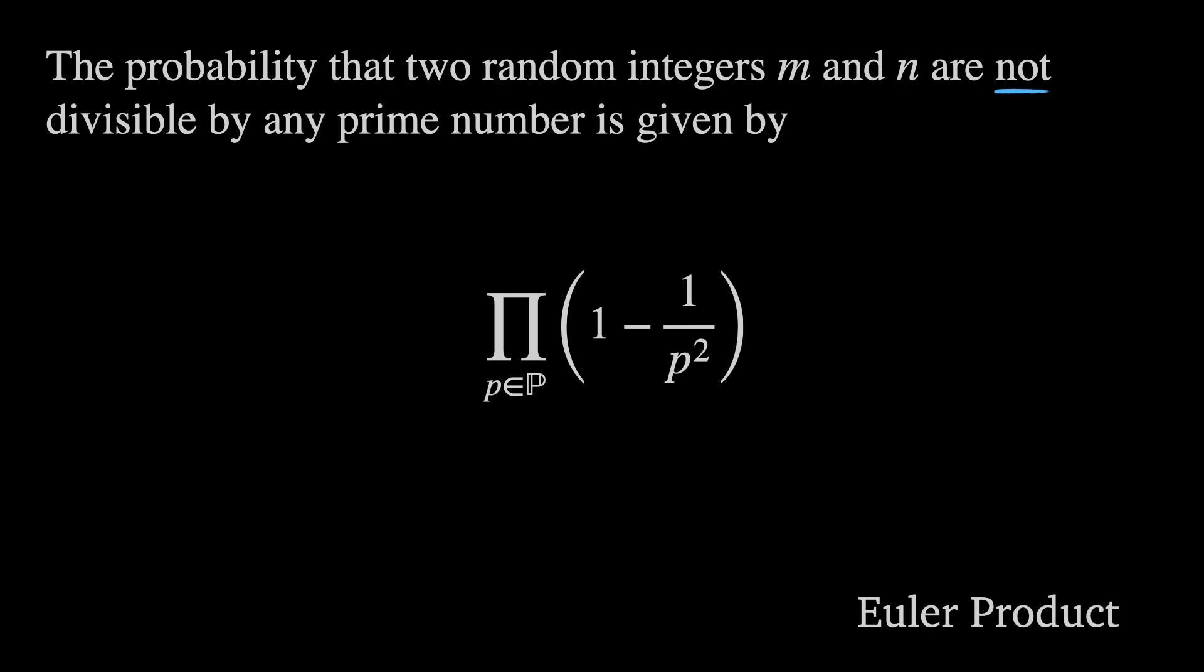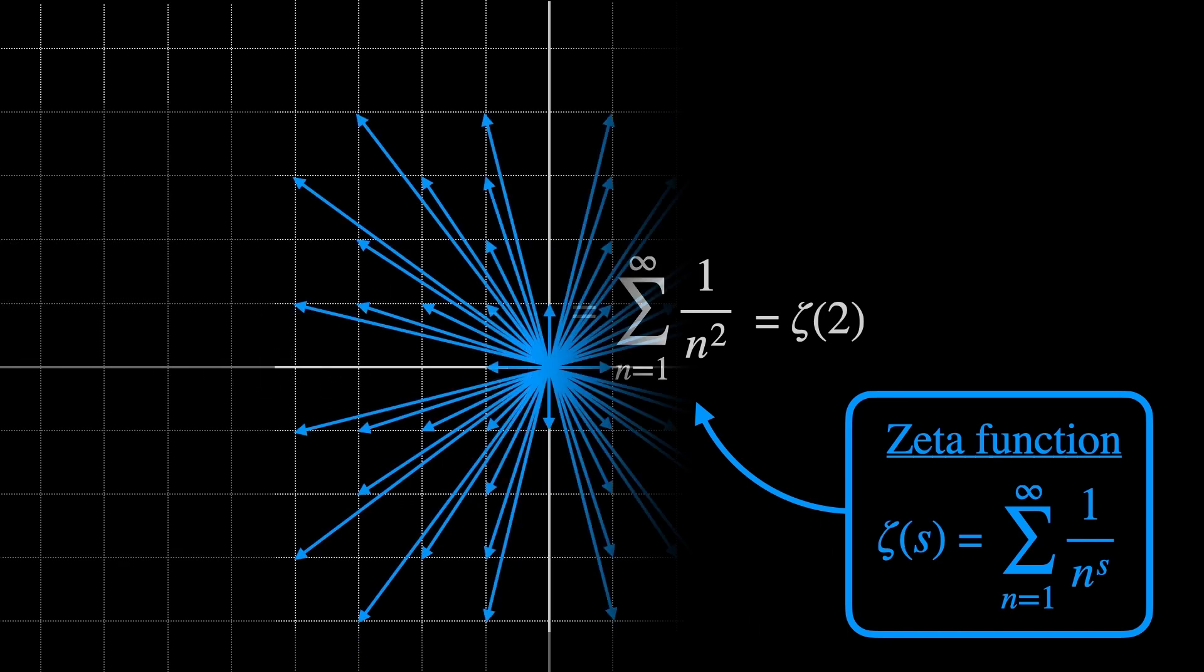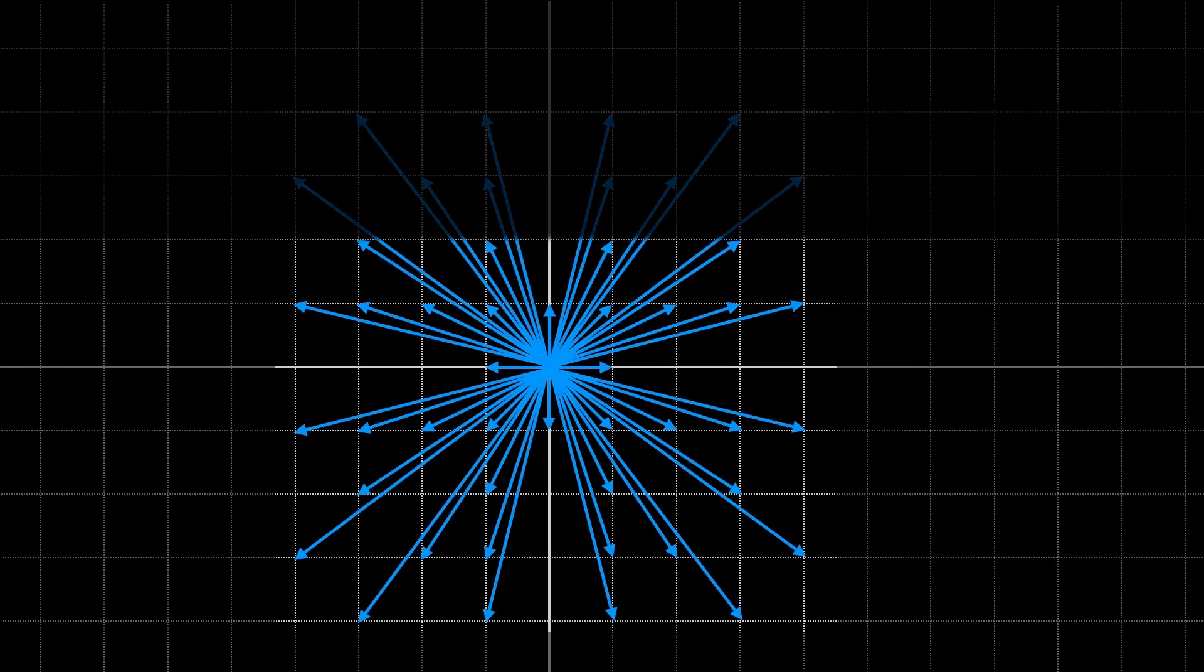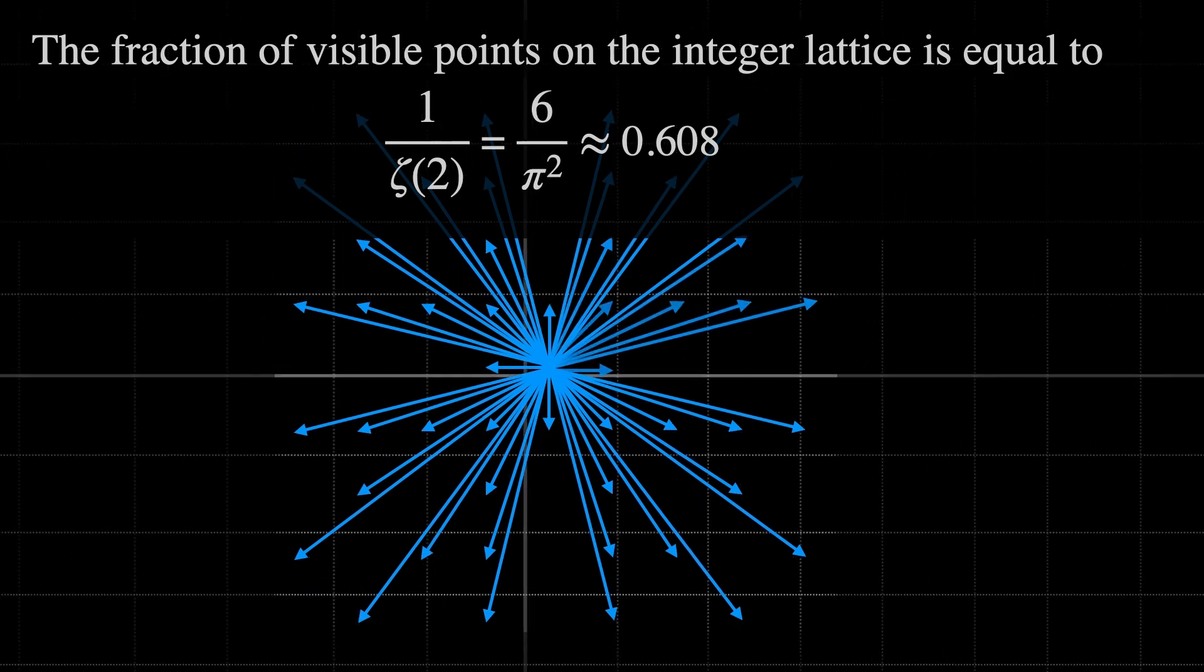Interestingly, there's a nice link between the Euler product and the Riemann zeta function. 1 over the Euler product, with P raised to the power 2, is equal to the sum from 1 to infinity of 1 over N squared. This is the zeta function evaluated at 2. And so, the fraction of visible points on the integer lattice is equal to 1 over zeta of 2. This is 6 over pi squared, or around 0.608.